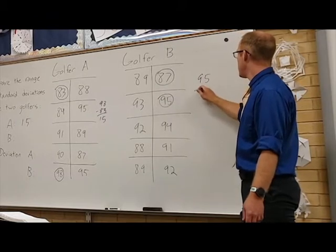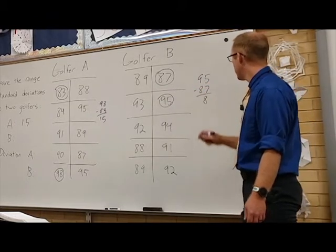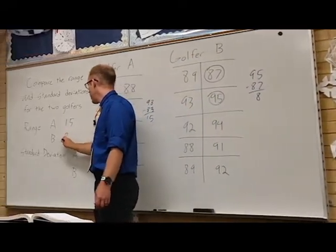So 95 minus 87, we get a total of 8. So the range for golfer B is 8.